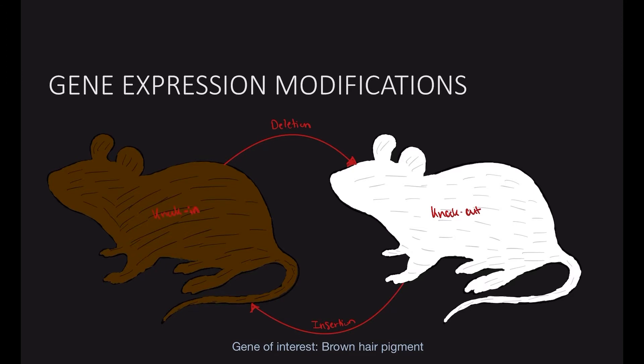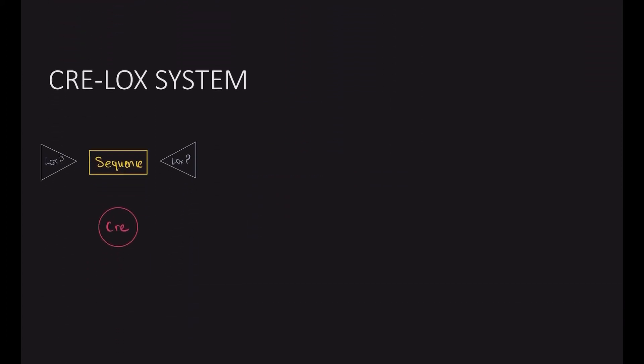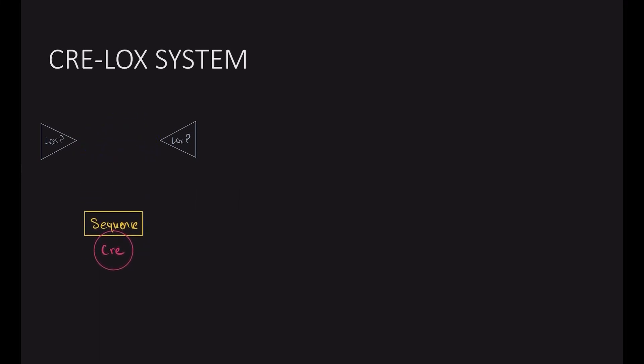Traditional knockout systems are restricted if the gene involves survival of the embryo, or if it is present in multiple types of cells. The CRELOC system allows manipulation of genes in a specific subset of cells, such as trying to study a gene where deletion causes death of the embryo.